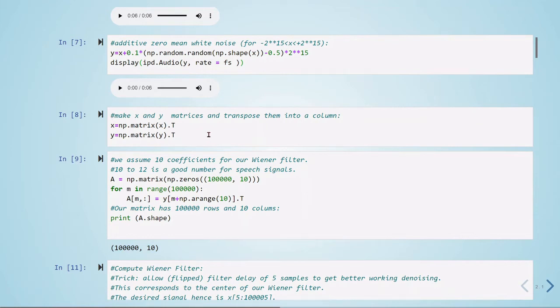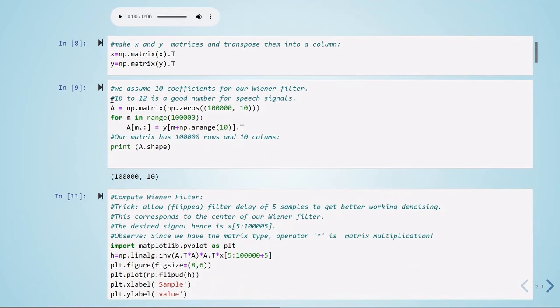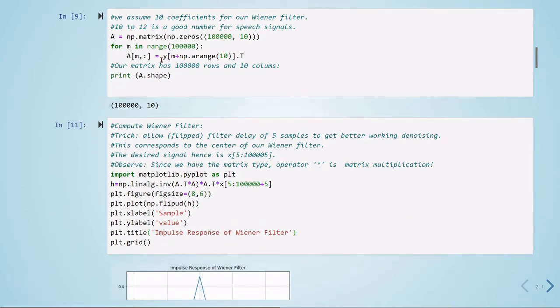In this part here we are transforming our arrays X and Y into matrices and transposing them into columns. Here we are defining this A matrix. We are going to use 10 coefficients for our Wiener filter, and this is what we are doing here. We are building this matrix A with our noisy signals Y, and we can see that there is a shape of 100,000 rows and 10 columns.